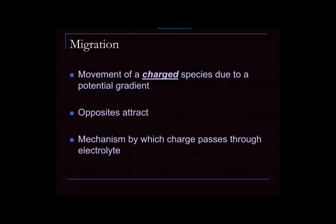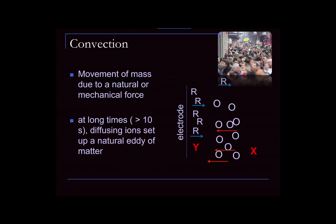Migration is also the mechanism whereby charge passes through an electrolyte. Typical electrolytes might be sodium and chloride: the sodium ion, if you have a negatively charged electrode, will migrate towards that electrode, while the chloride anion will migrate away. That is the mechanism whereby charge passes through an electrolyte via migration.